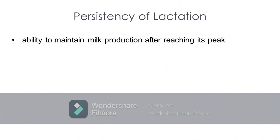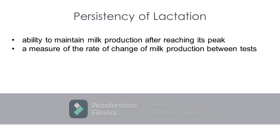Persistency of lactation is typically defined as the ability to maintain milk production after reaching its peak. High persistency is associated with a slow rate of decline in production, whereas low persistency is associated with a rapid rate of decline. Persistency is a measure of the rate of change of milk production between tests.